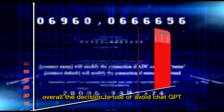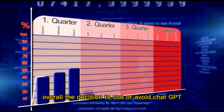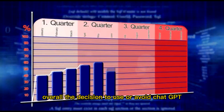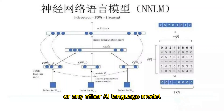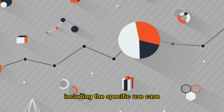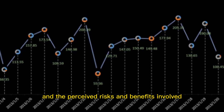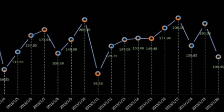Overall, the decision to use or avoid ChatGPT or any other AI language model may depend on a variety of factors, including the specific use case, the level of trust in the technology, and the perceived risks and benefits involved.